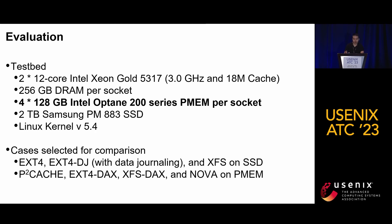We have evaluated the effectiveness of P2Cache using both micro-benchmarks and real-world applications. Here shows the basic configuration of our testbed. Most importantly, we installed four Intel Optane 200-series persistent memory modules. We compare P2Cache with EXT4, EXT4 data journaling, and XFS, all operating on SSD. We also compare P2Cache with EXT4-DAX, XFS-DAX, and NOVA operating on persistent memory.